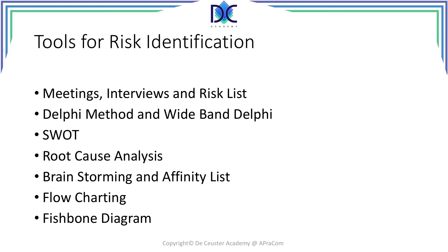The tools for risk identification — I will just name them here and look at the next session to describe them in more detail. We can use meetings, interviews, and risk lists. There is the Delphi method and the wideband Delphi method. We have the SWOT analysis, root cause analysis, brainstorming and the affinity list, flowcharting, and the fishbone diagram.